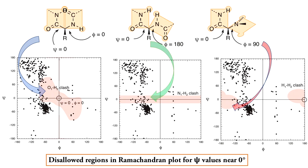For any value of phi other than 0 and 180, there would be some steric clash between the amino group nitrogen of one amino acid and the amide group hydrogen of the other. Again, since hydrogen atoms are small, these clashes are not that serious, but they would rule out some small regions of the Ramachandran plot.